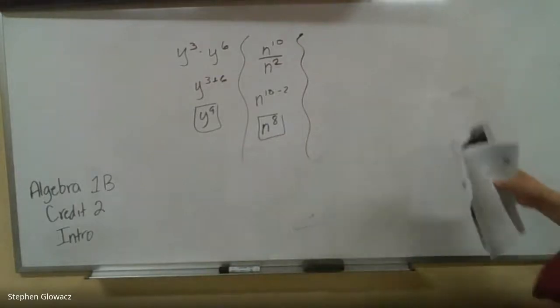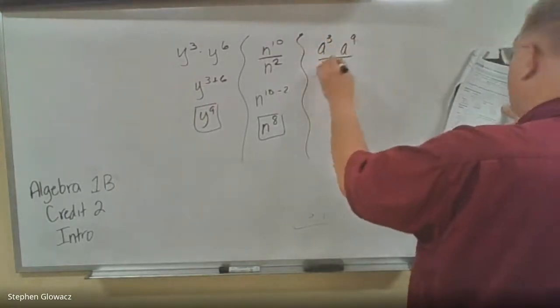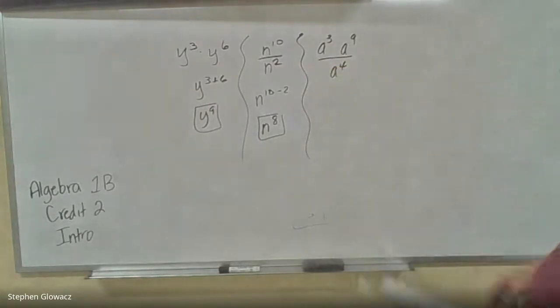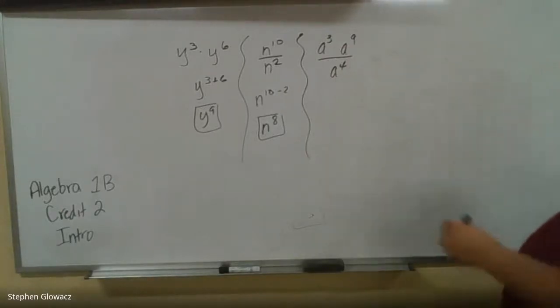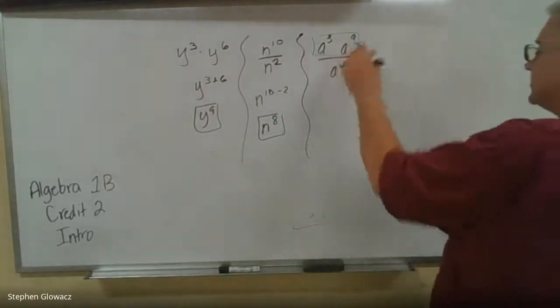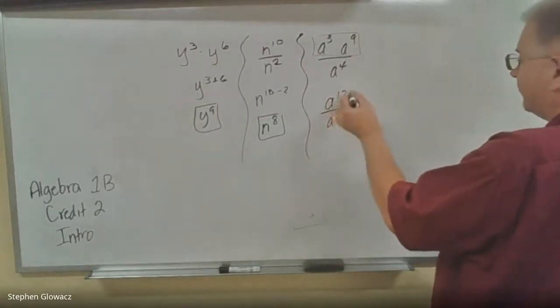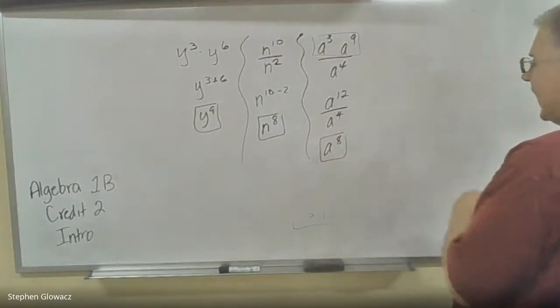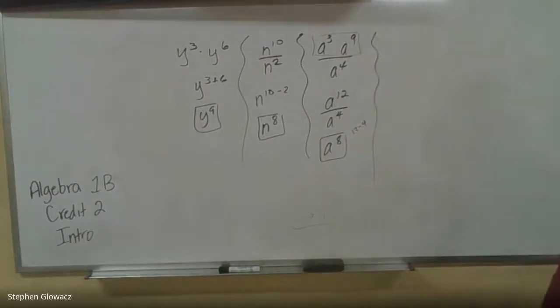Number 9, we have A to the third times A to the ninth over A to the fourth. So we've got both going on here, multiplying and division. Remember, we treat the fraction bar as grouping symbols, meaning we're going to deal with these first. So we add 3 plus 9 is 12. And then we divide, we subtract. So we've got 12 minus 4, which would be 8. So A to the 8th.